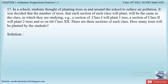Let us understand the question. In a school the students are planting trees to reduce air pollution. It was decided that the number of trees each section of each class will plant will be the same as the class. So a class 1 student will plant one tree, class 2 will plant two trees, class 3 will plant three trees, and so on till the 12th class. There are three sections of each class — class 1 has three sections, class 2 has three sections, and so on till class 12.